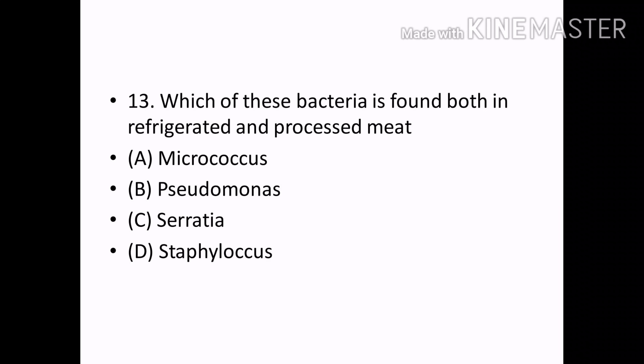Which of these bacteria is found both in refrigerated and processed meat? Options — Micrococcus, Pseudomonas, Serratia, Staphylococcus. Correct answer: Option A — Micrococcus.